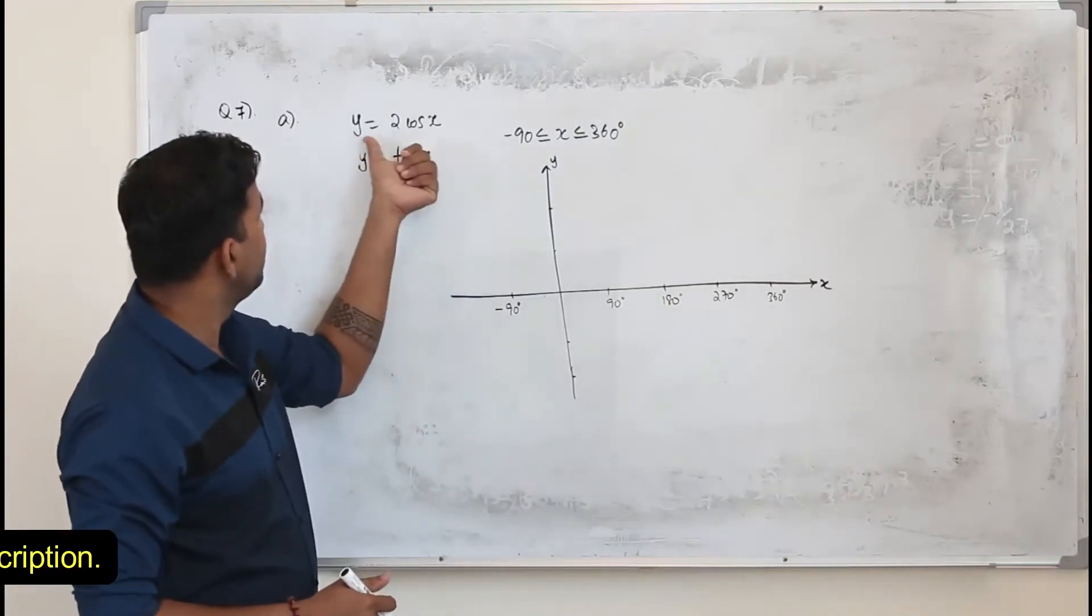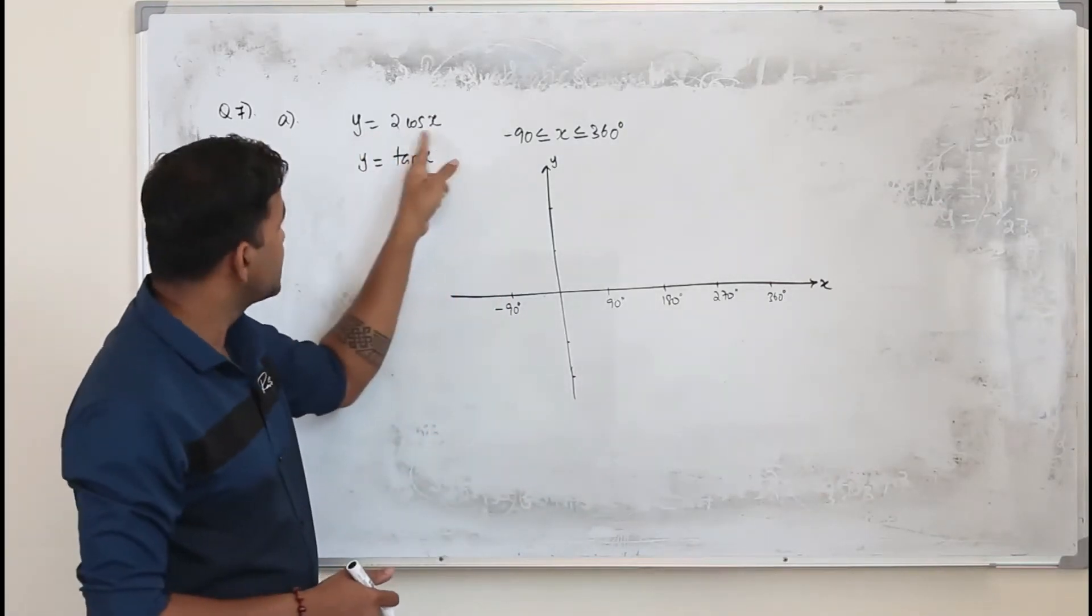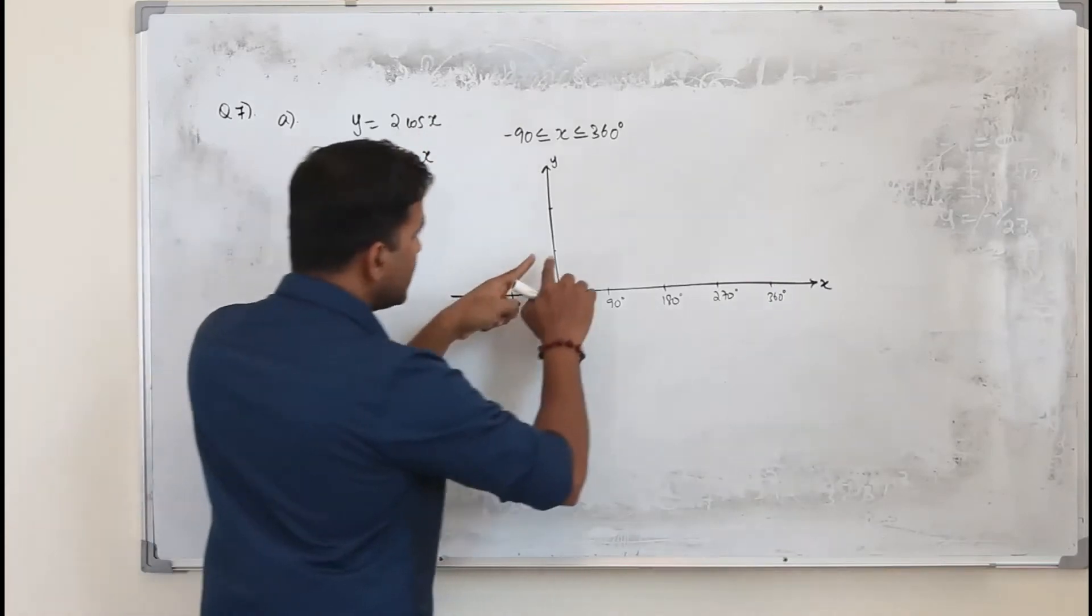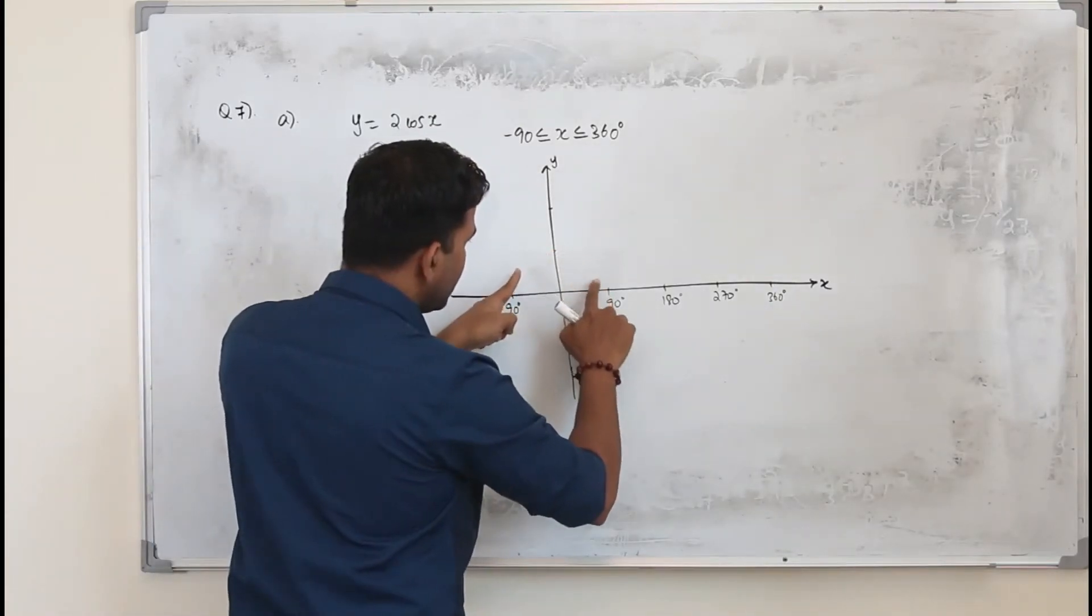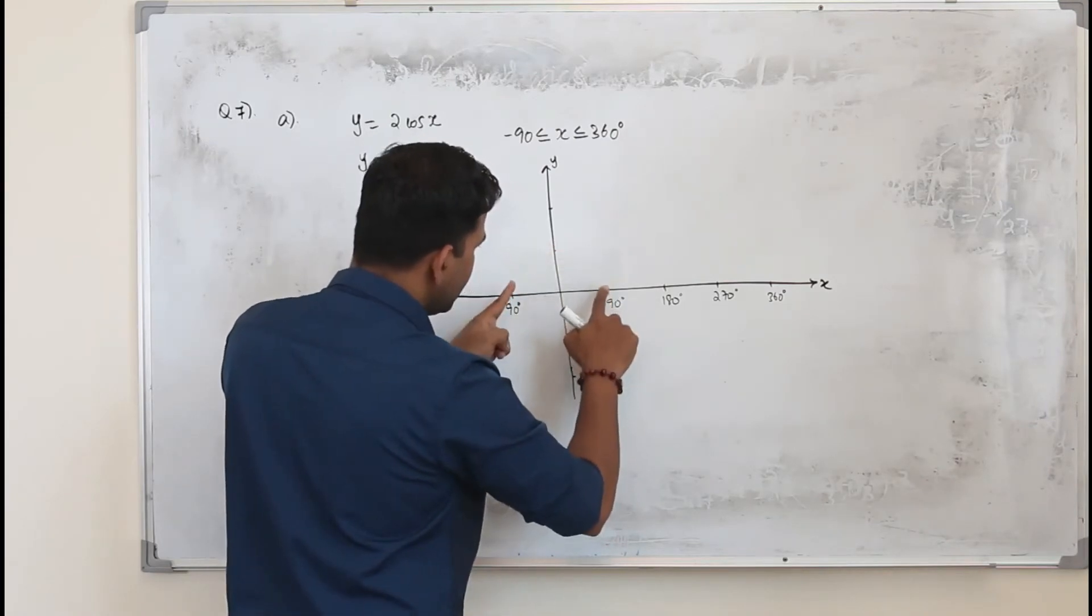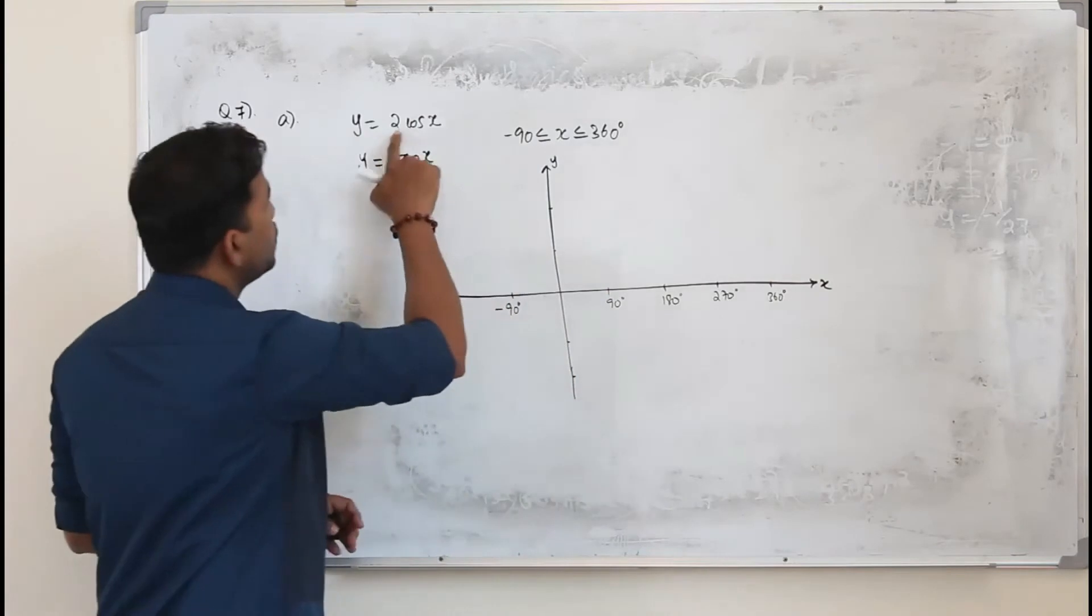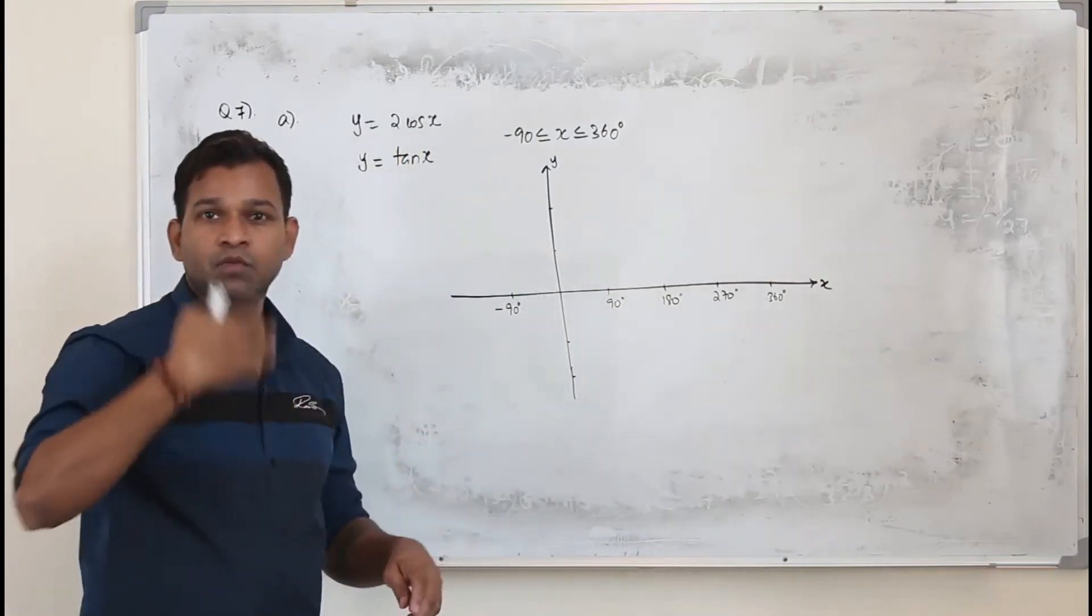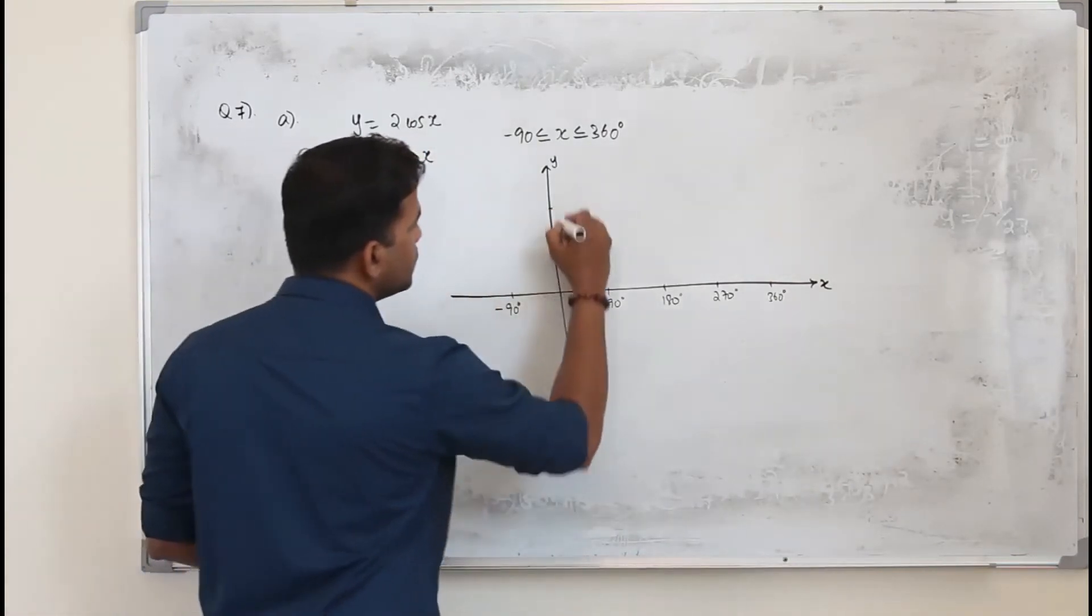For the first one, y = 2cos(x): if it were just cos(x), the cosine graph starts from 1 and is symmetrical on both sides of the y-axis, intersecting at 90 and -90 degrees. But since it's 2cos(x), you multiply the y-coordinates by 2.